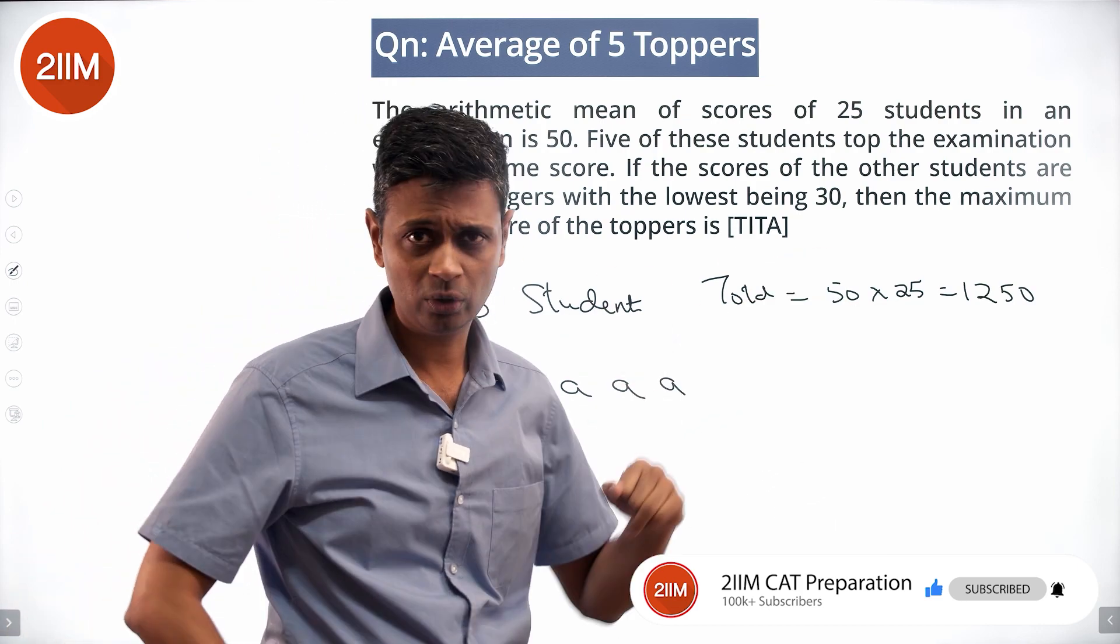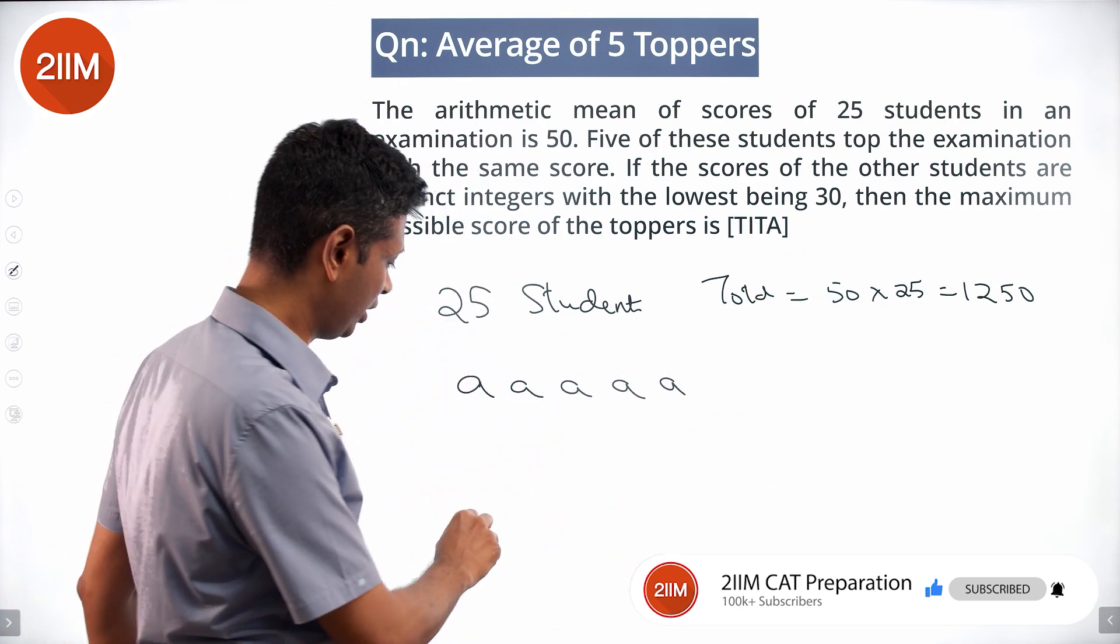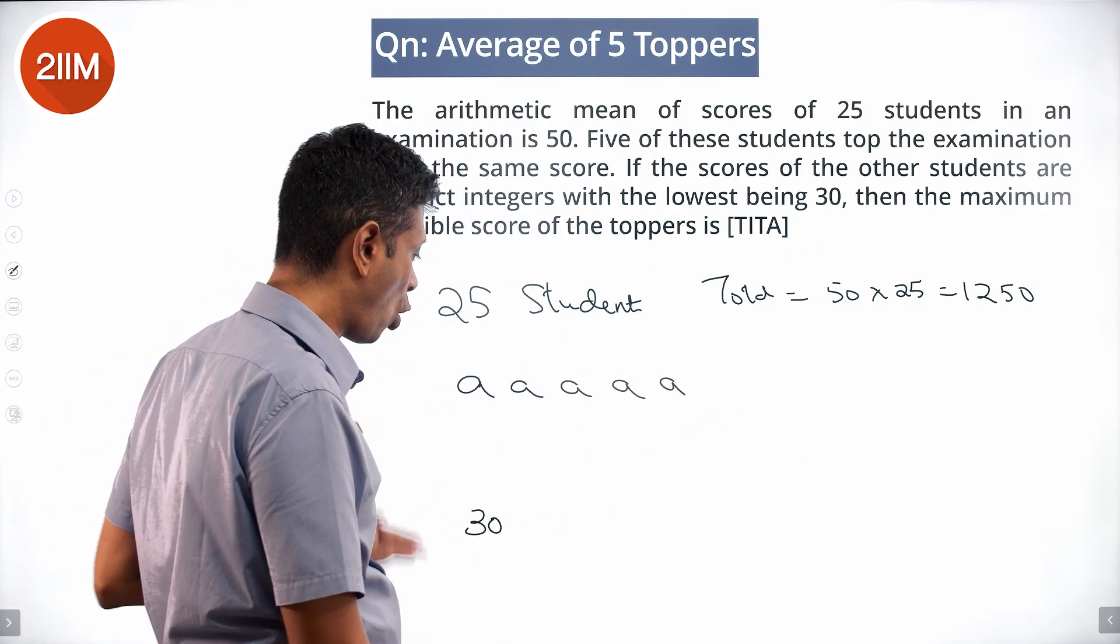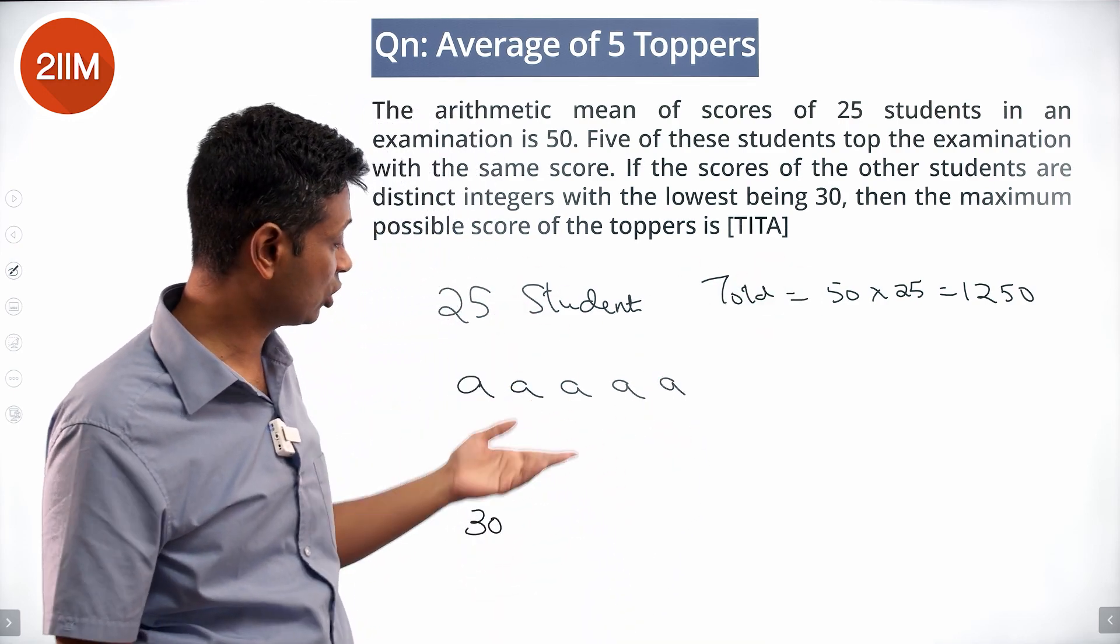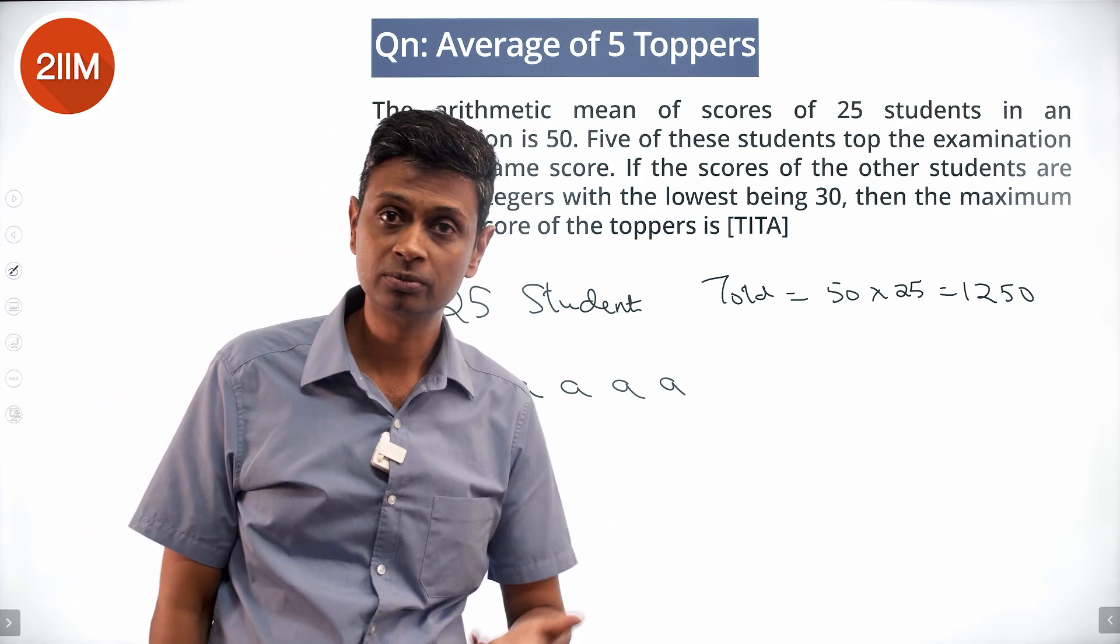Sum of everything is 1250. The smallest is 30. All of these added up together is 1250. This has to be as high as possible, so these have to be as low as possible.